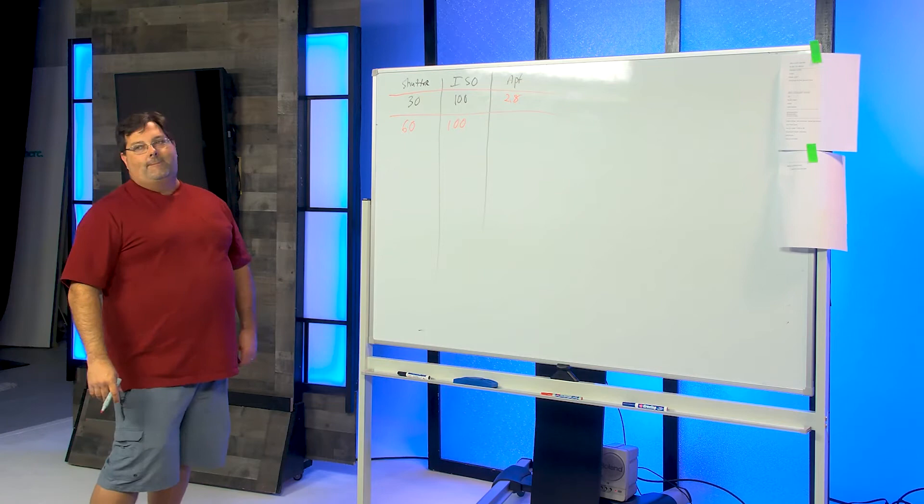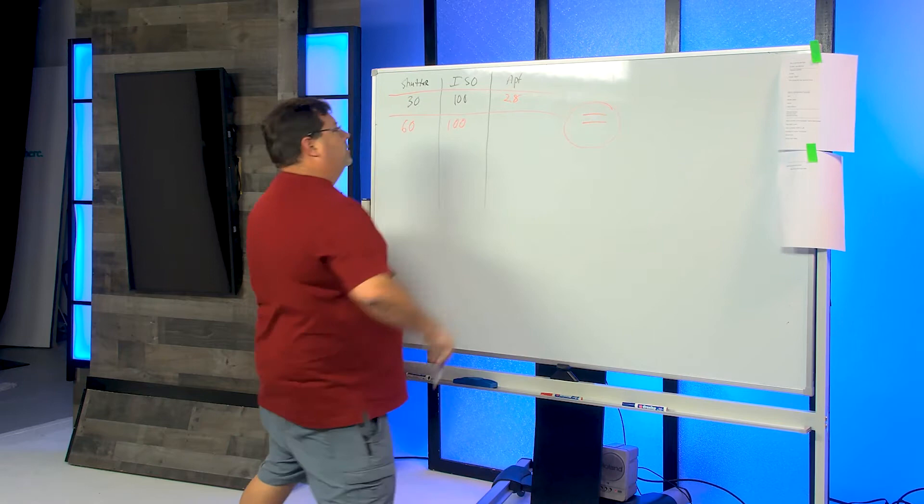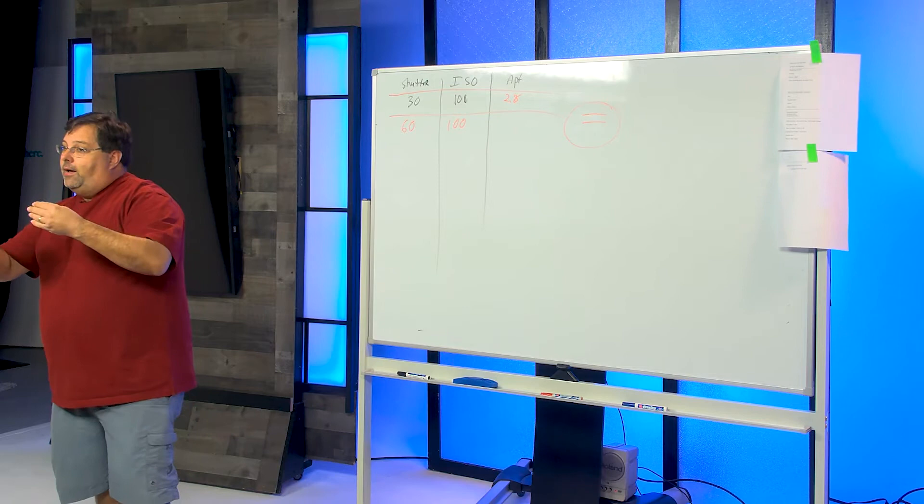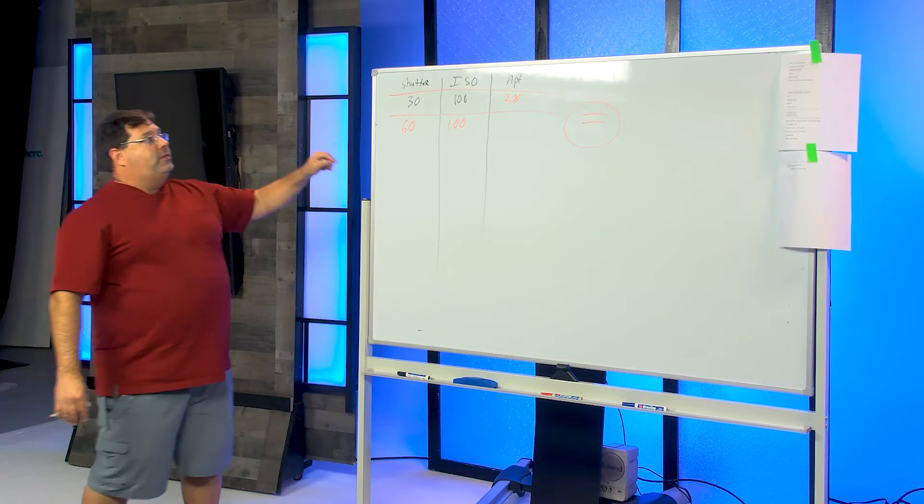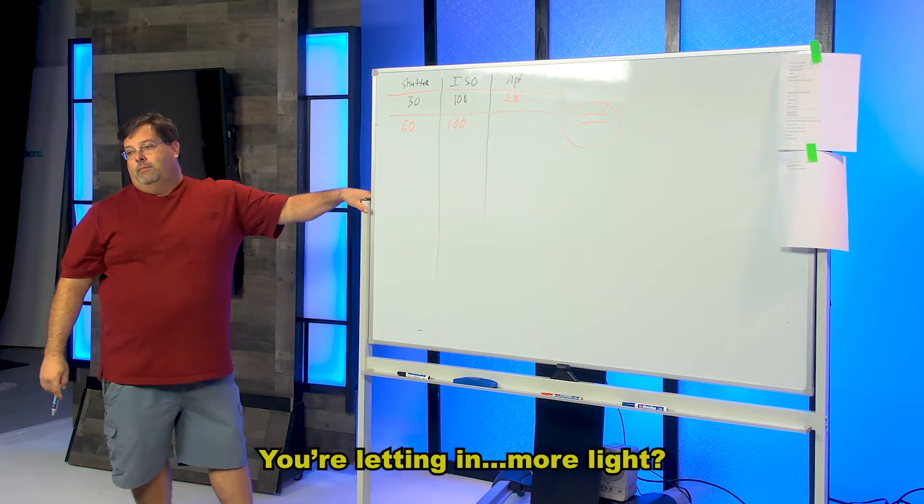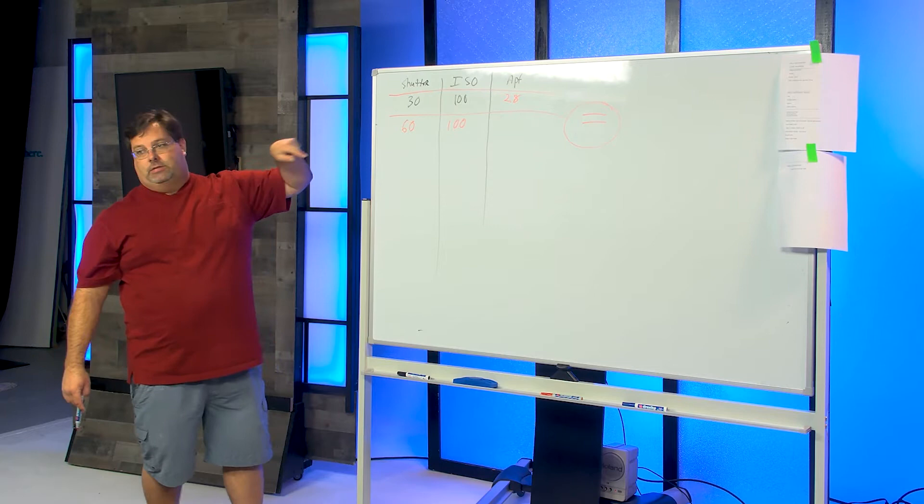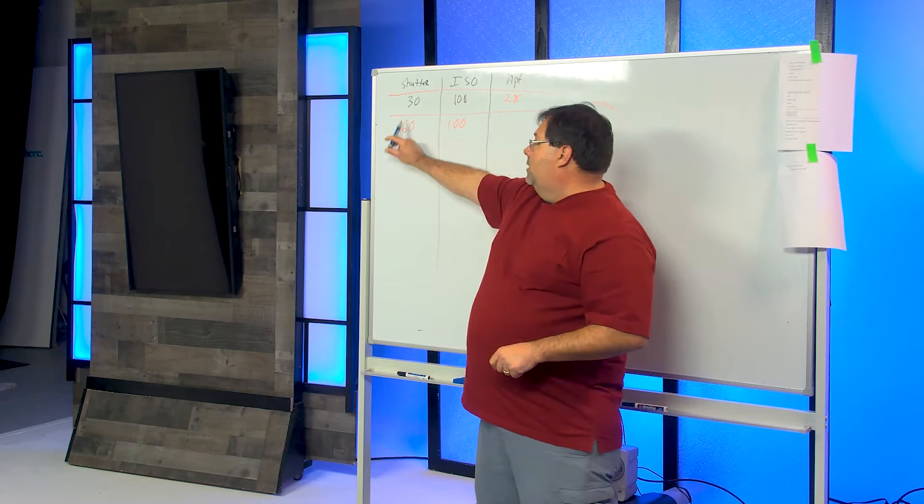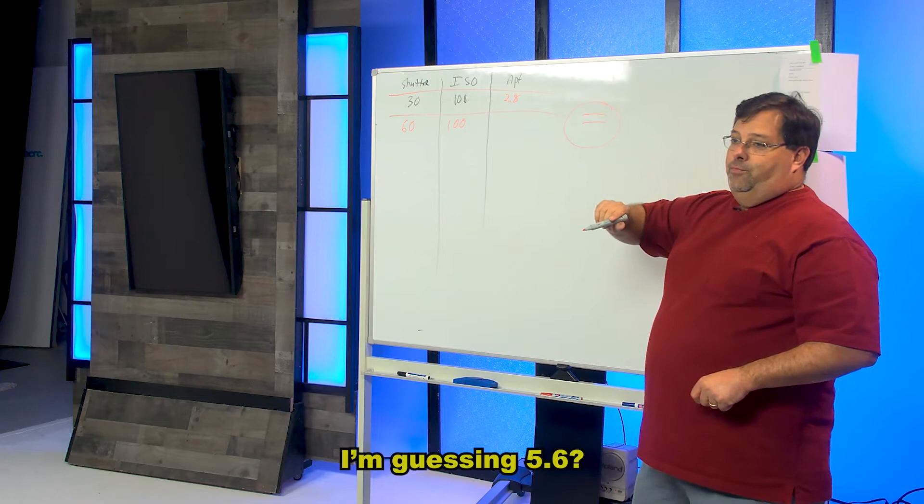1/60th of a second, 100 ISO. I want equal exposure - nothing's changed. The only thing I'm changing is 1/30 to 1/60, so I'm letting in less light. Now what do we know about f/2.8? We gotta open this up. So what f-stop would that be? f/1.4, yes.